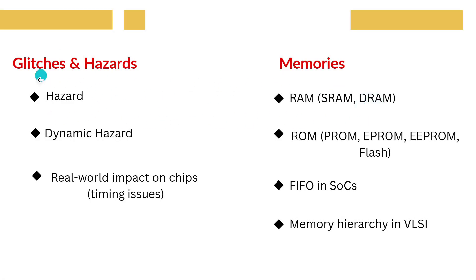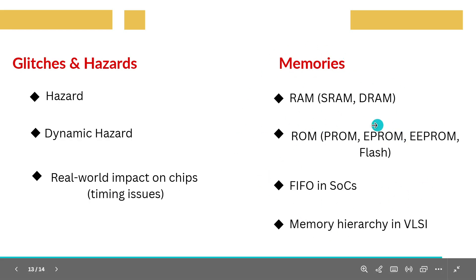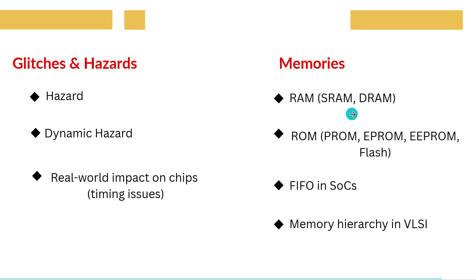Hazards and glitches. When signals travel at different delays, we may face hazards or glitches. A glitch is a temporary unwanted output change. Static hazards and dynamic hazards are important to understand because they can cause incorrect functioning of a circuit. In industry, timing closure and verification teams deal with these issues.